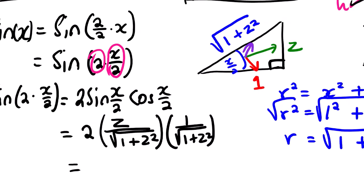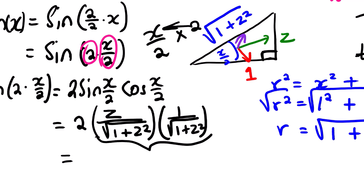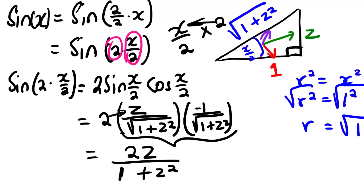From here we simplify. We take the numerators and multiply: 2 × Z × 1 = 2Z. The denominators multiply: √(1 + Z²) × √(1 + Z²) = 1 + Z². So our first identity is: sin X = 2Z / (1 + Z²).